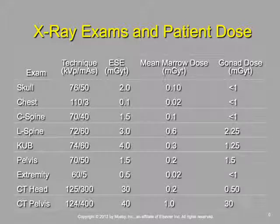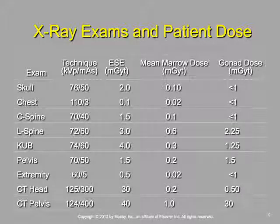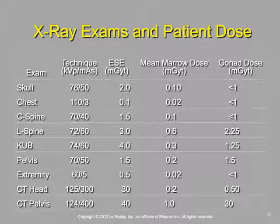Sometimes if we really want to shield a patient's gonads for a KUB, we might do it PA. Because now most of the dose is going to be distributed over that entrance skin side, and there'll be decreased dose on the side of the gonads. So these are some of the considerations we have to think about.